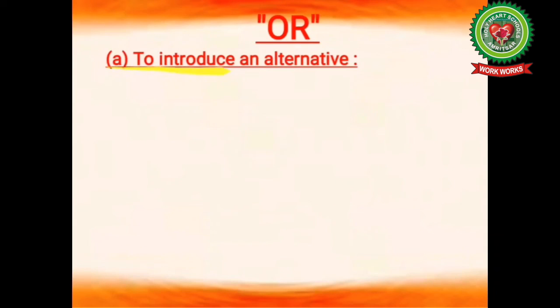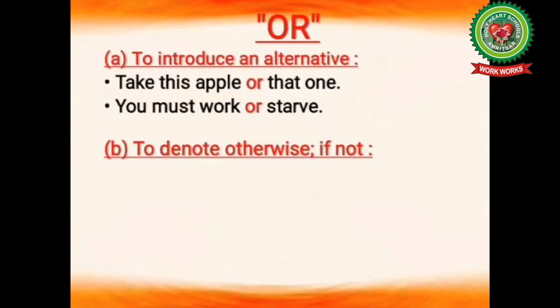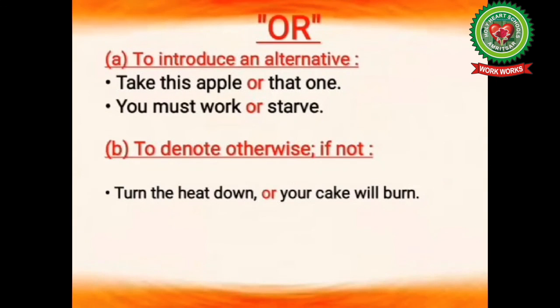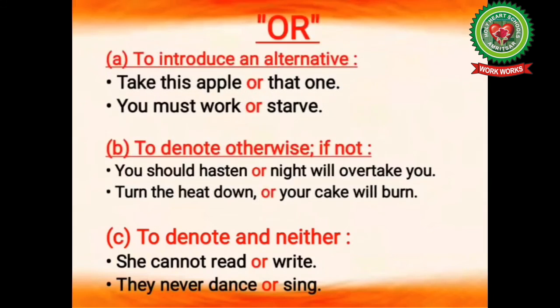The next conjunction is 'or'. Or is used to introduce an alternative — it is used for an option. Example: take this apple or that one; you must work or stop. Or is also used to denote 'otherwise, if not': turn the heat down or your cake will burn — meaning if you do not turn the heat down, your cake will burn. Or is also used to denote 'neither': she cannot read or write — meaning she can neither read nor write. They never dance or sing — meaning they neither dance nor sing.